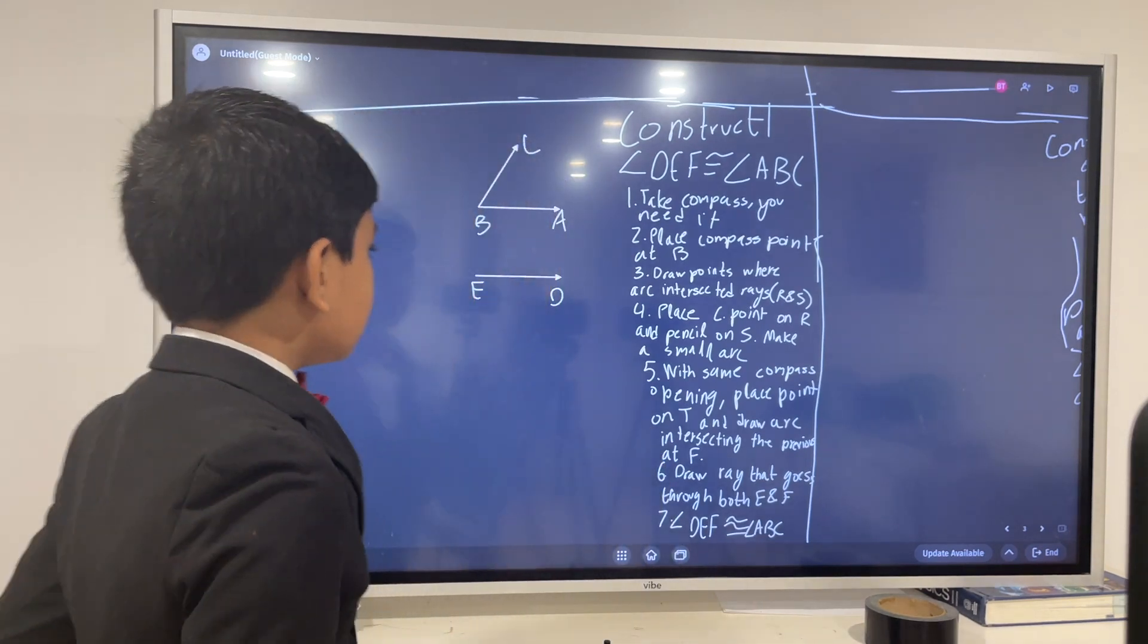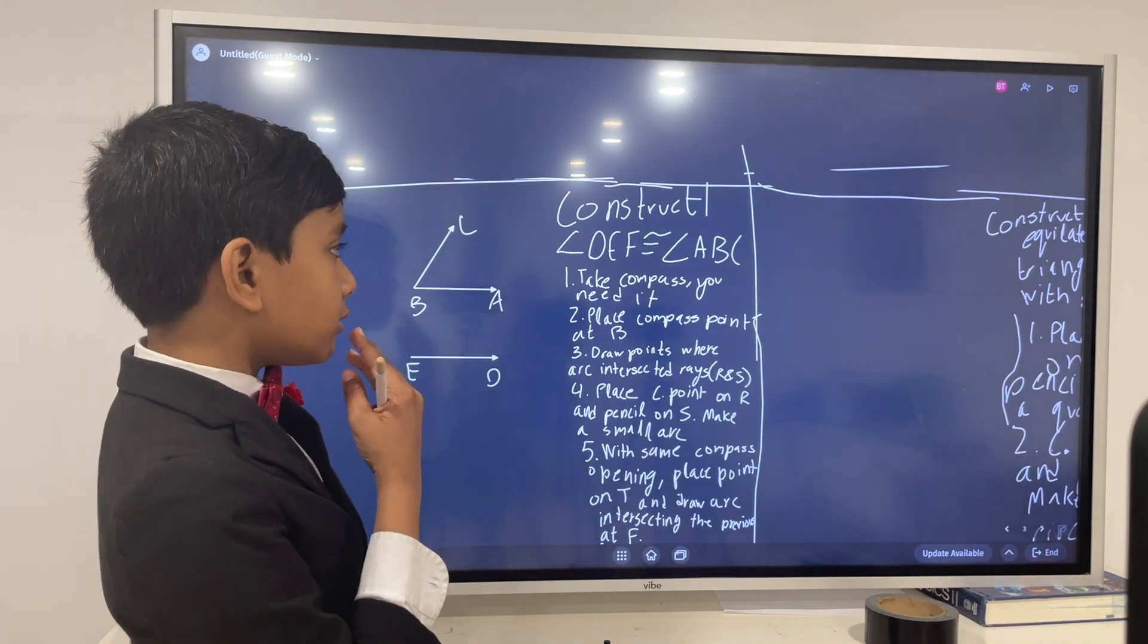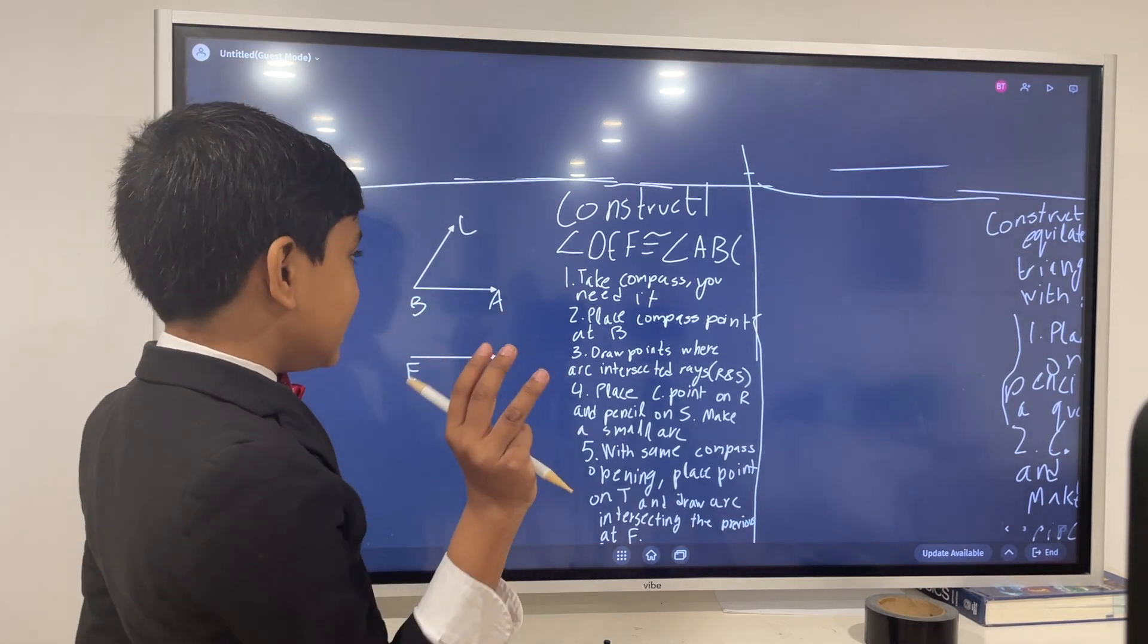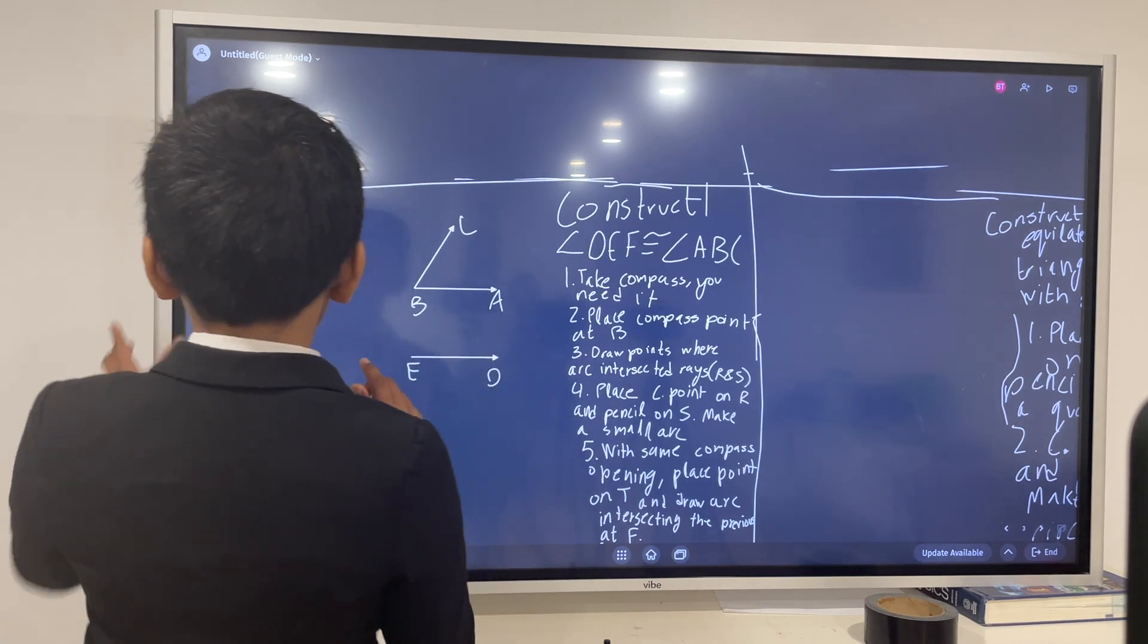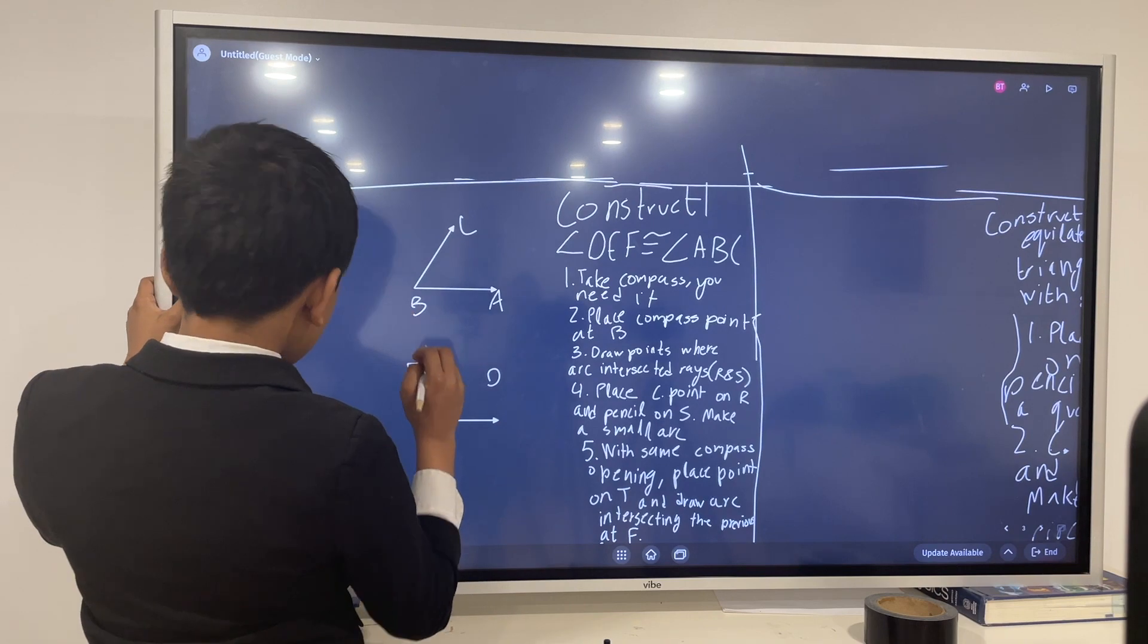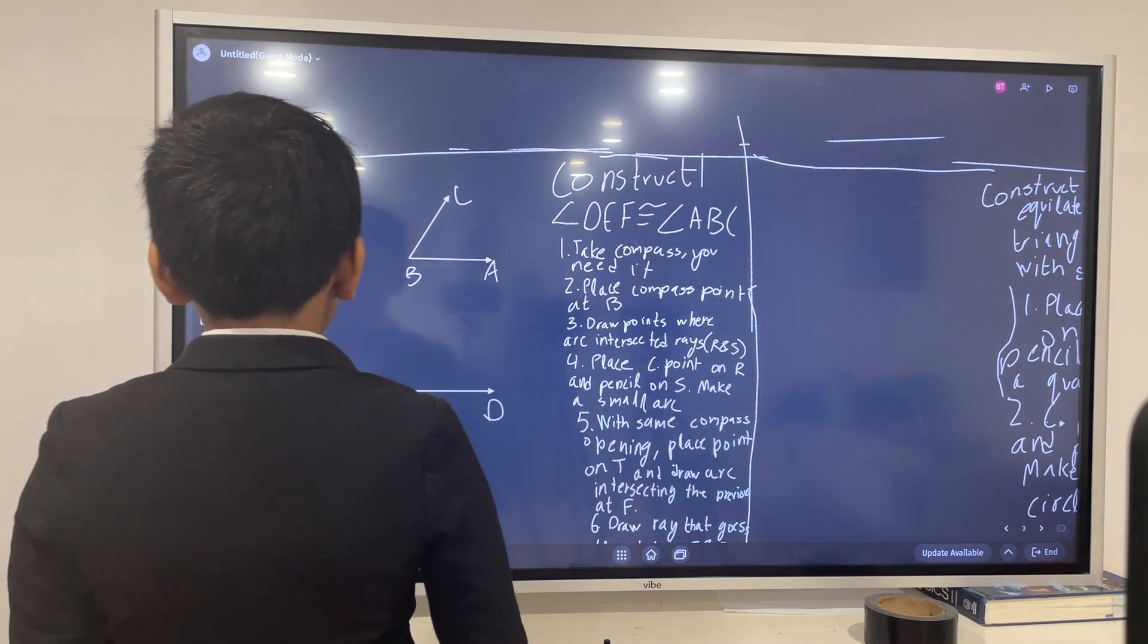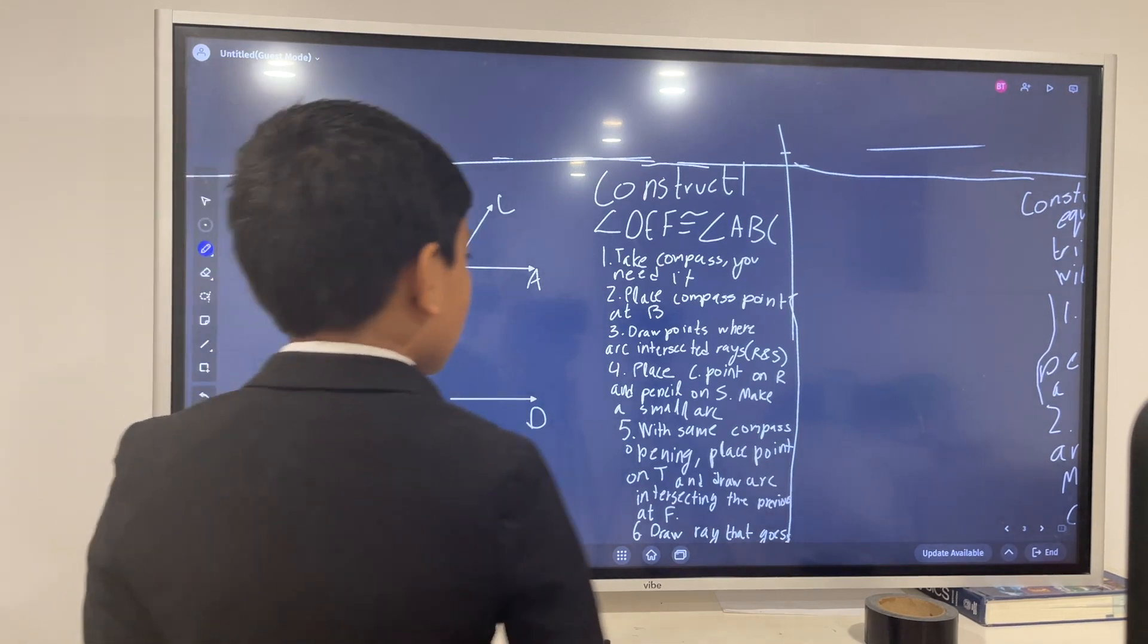So first of all, we're going to be copying angles. How do we construct angle DEF which is congruent to angle ABC? Alright. Take the compass you needed. First step, very important. And let's also bring this down a little bit. We're going to be using instructions from here, and we're going to be using circles as a replacement for our compass.